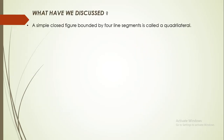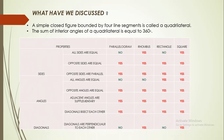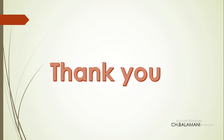So what we have discussed: a simple closed figure bounded by four line segments is called a quadrilateral. The sum of interior angles of a quadrilateral is equal to 360 degrees. All sides are equal in rhombus and square. All angles are equal in rectangle and square. Diagonals are perpendicular to each other in rhombus and square. So children, observe the things around and classify them into types of quadrilaterals you have learnt, and note the properties you observe in them. Thank you all for watching this.